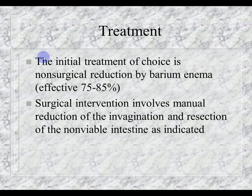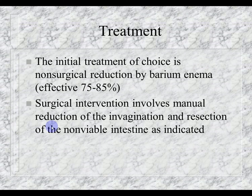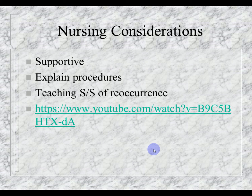Treatment: initial non-surgical reduction by barium or water-contrast enema with air pressure is effective 75 to 85% of the time. Surgical intervention involves manual reduction of the invagination and then resection if needed. Nursing considerations are supportive — explaining the procedure and teaching the signs and symptoms of recurrence. YouTube videos are also available to help explain the condition.